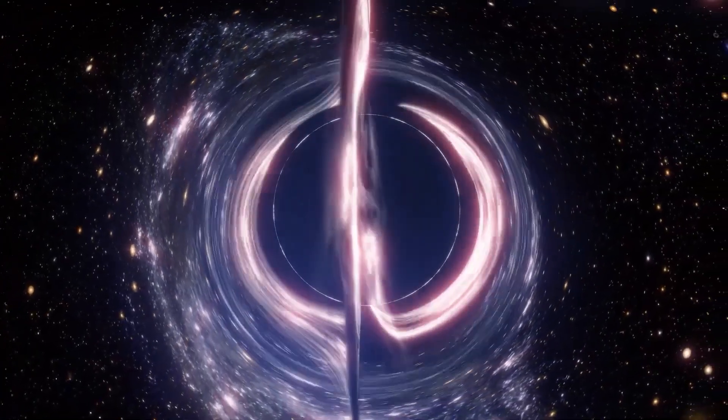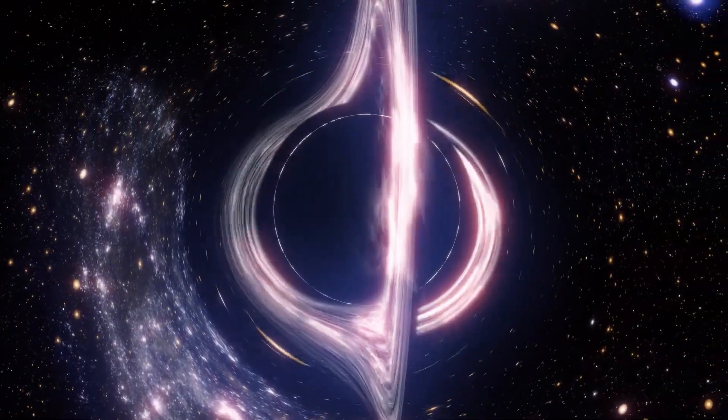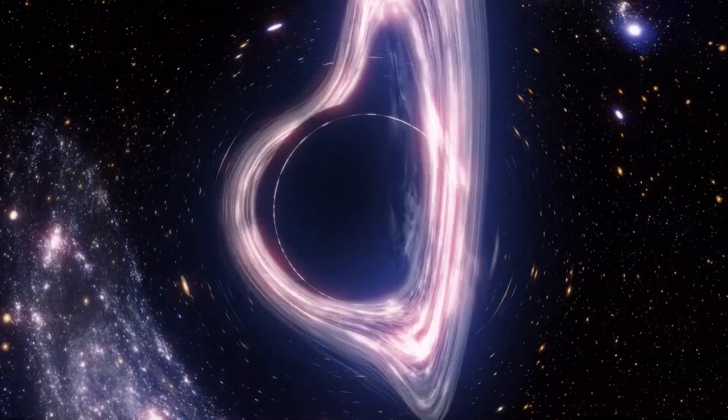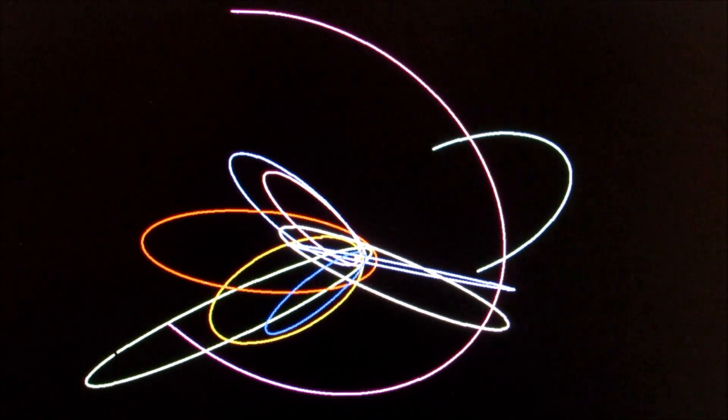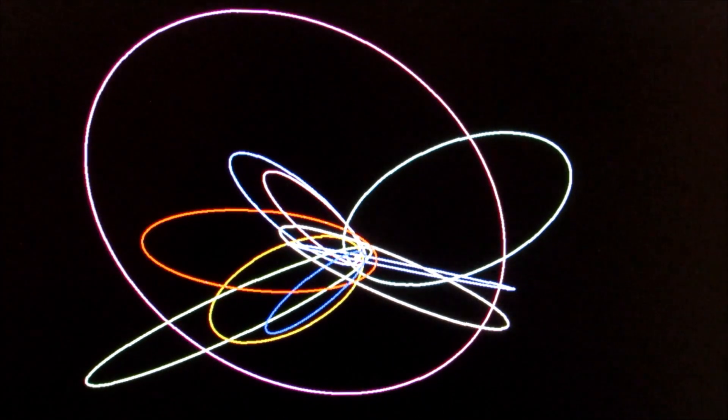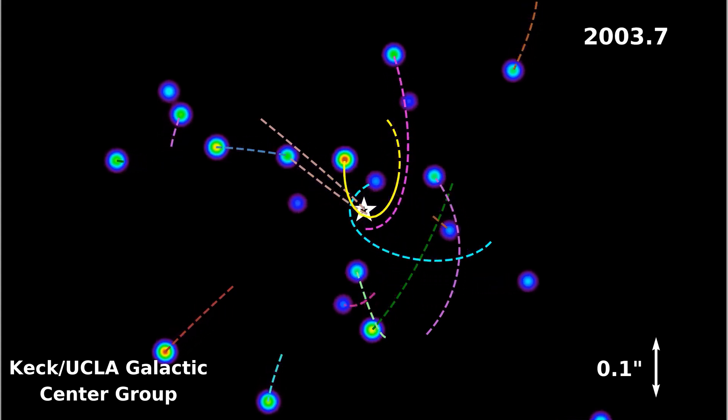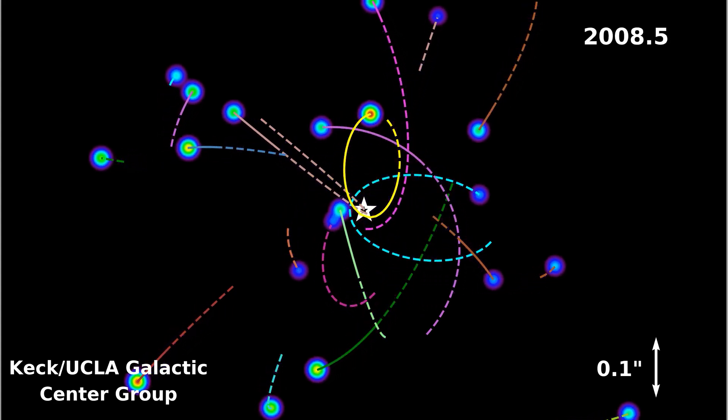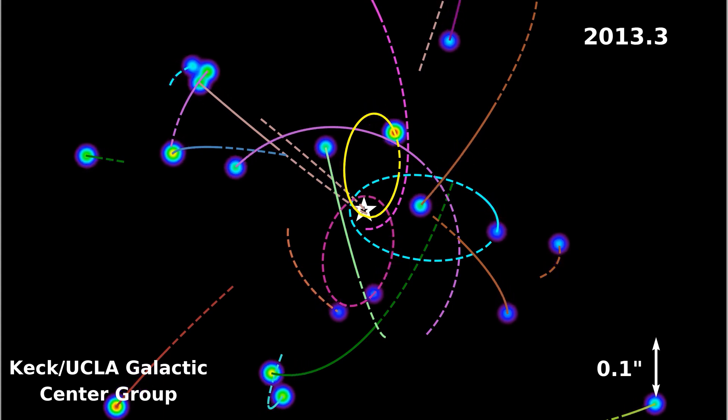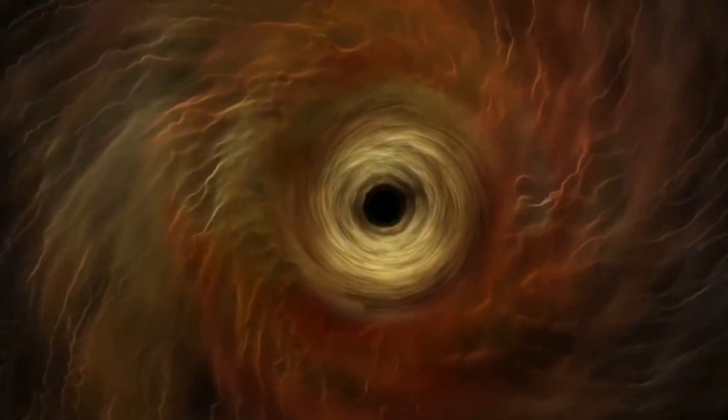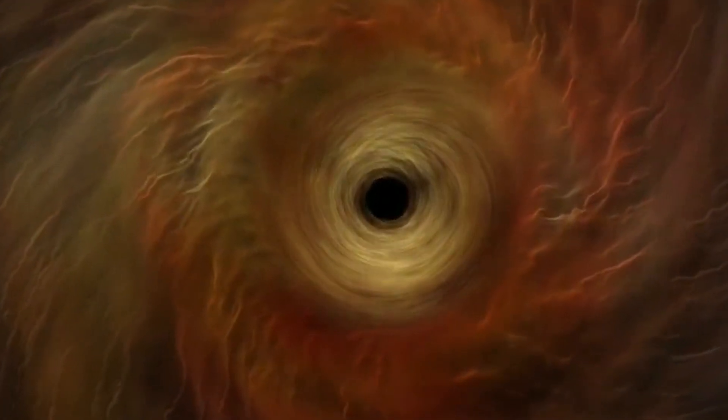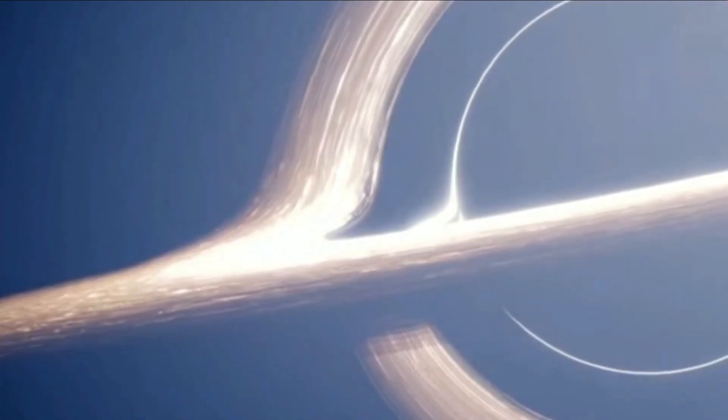Supermassive black holes, like the one in the center of our galaxy, Sagittarius A star, influence many surrounding stars. Stars near this black hole, known as S stars, orbit it in elongated ellipses. By analyzing these orbits, scientists determined the central object's mass to be 4.3 million solar masses. Given that this immense mass is confined within a sphere no more than 45 astronomical units in diameter, scientists concluded it must be a black hole, as anything else would have collapsed into a black hole under its gravity.